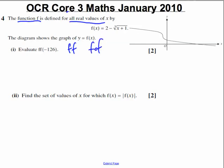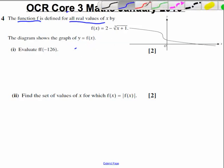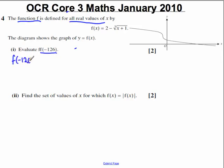The easiest way to do this type of question is evaluate f, the function, at minus 126, get the number for that, and then substitute it back into f to work out what f of f of minus 126 is. So to start with, let's work out f of minus 126.